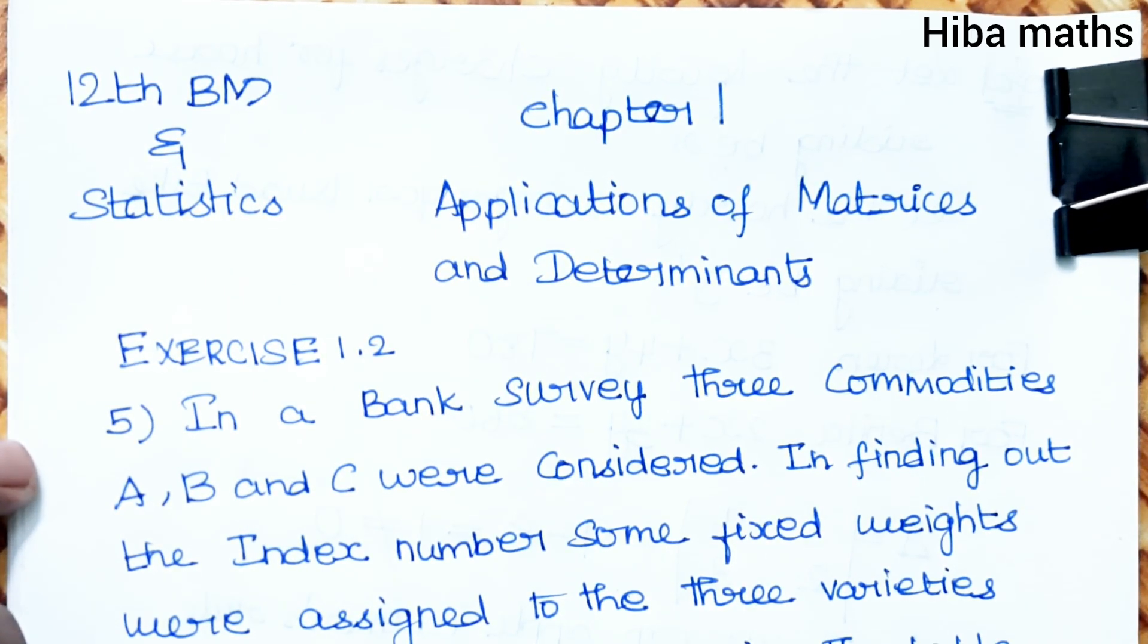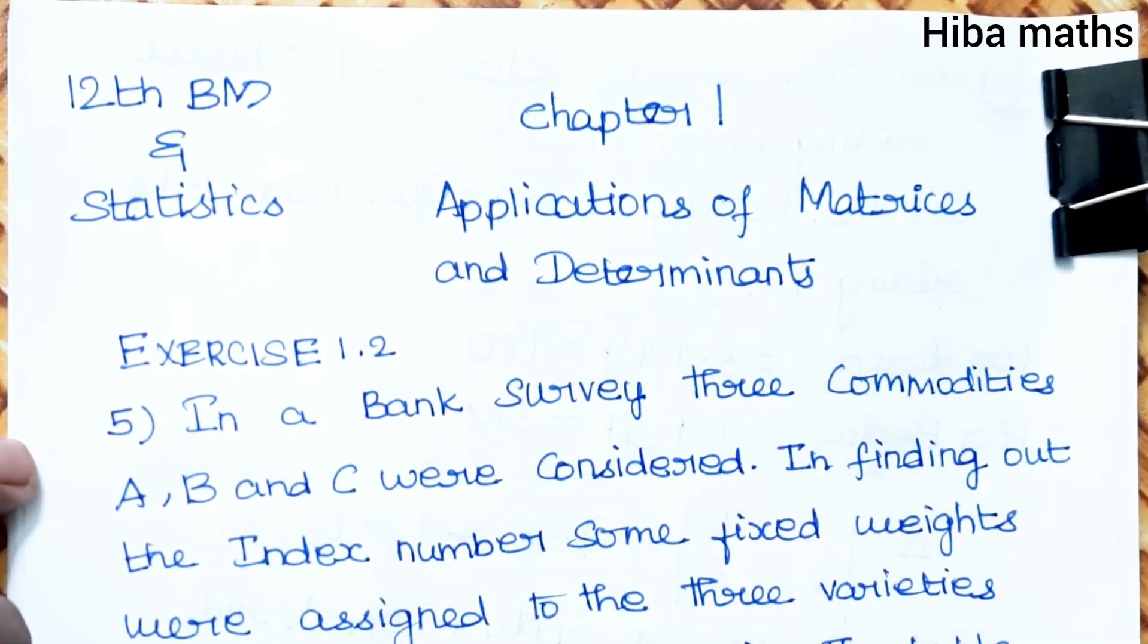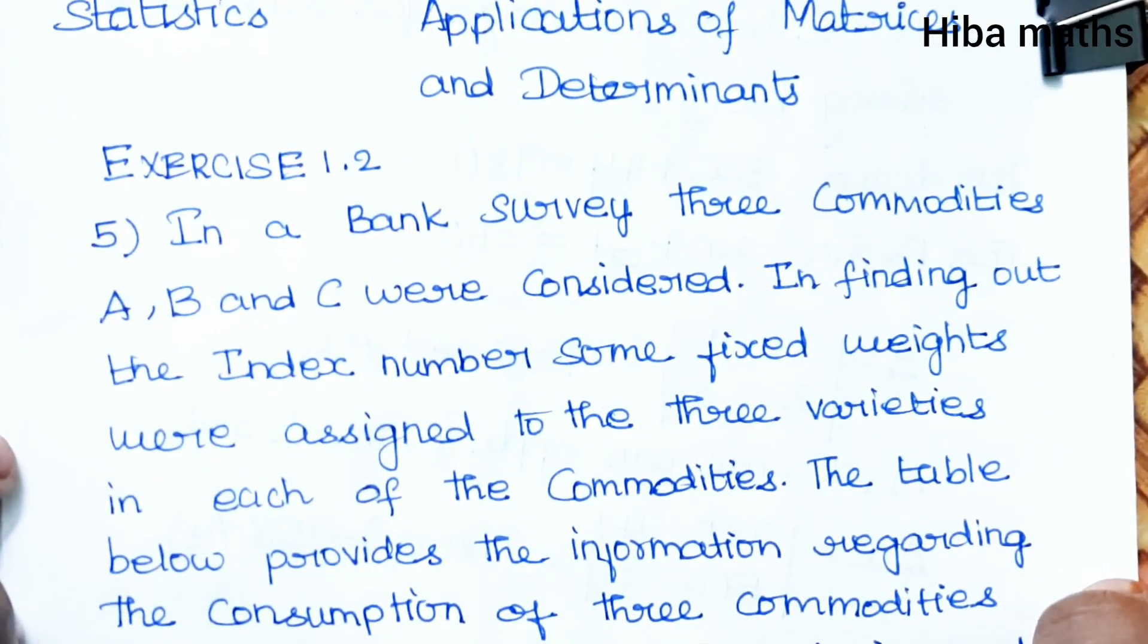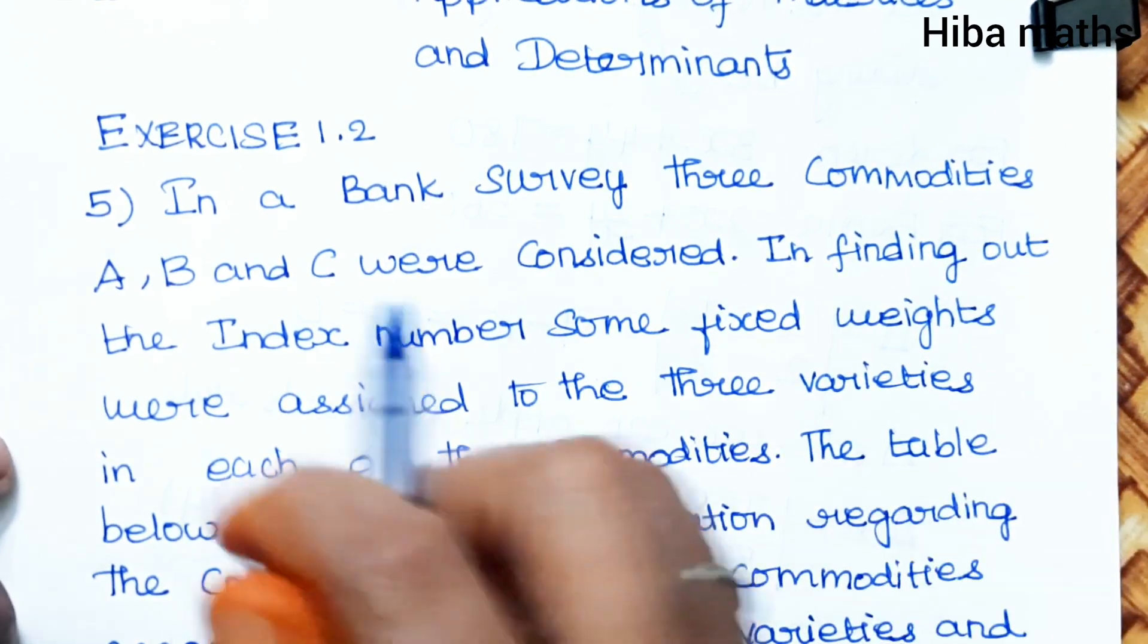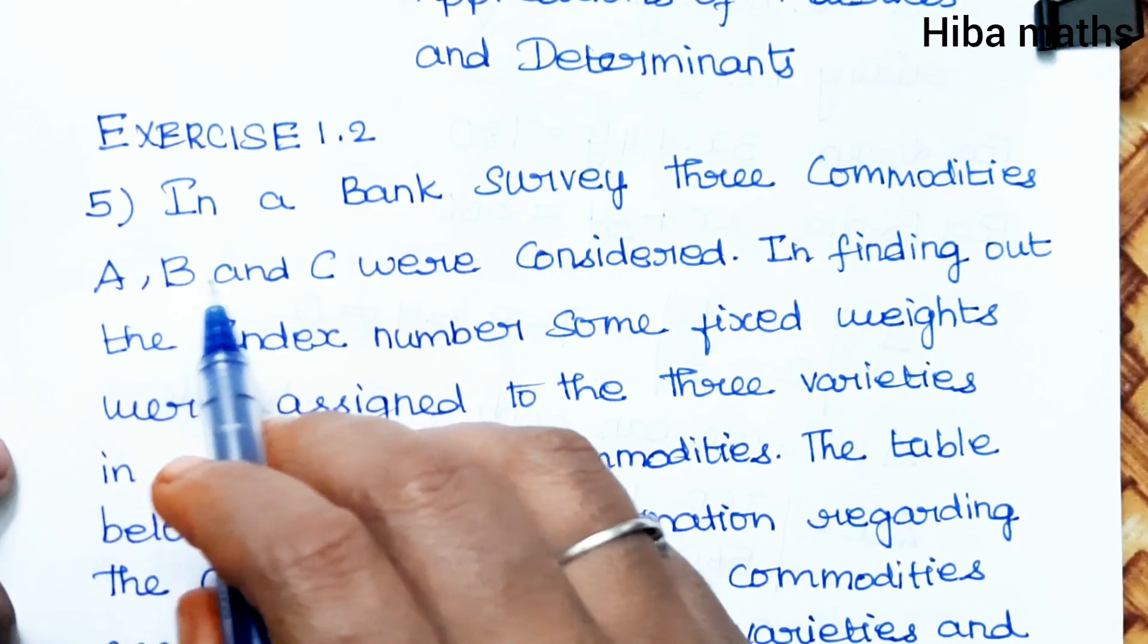Hello students, welcome to Hiba Maths. 12th standard Business Maths and Statistics, Chapter 1: Applications of Matrices and Determinants. Exercise 1.2, fifth question. In a bank survey, three commodities A, B, and C were considered.